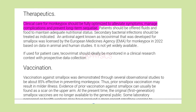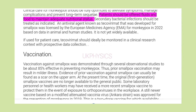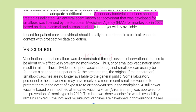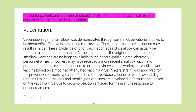Therapeutics: Clinical care for monkeypox should be fully optimized to alleviate symptoms, manage complications and prevent long-term sequelae. Patients should be offered fluids and food to maintain adequate nutritional status. Secondary bacterial infections should be treated as indicated. An antiviral agent known as tecovirimat, developed for smallpox, was licensed by the European Medicines Agency for monkeypox in 2022 based on data in animal and human studies. It is not yet widely available, and if used, should ideally be monitored in a clinical research context with prospective data collection.